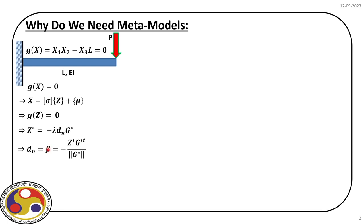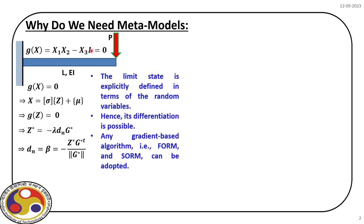The first order reliability method requires the gradient; for the second order reliability method, the limit state function must be twice differentiable. The key point is that in gradient-based reliability analysis, we must know the limit state function in closed form. For the cantilever beam, g(x) = x1·x2 − x3·l is an explicitly defined limit state, where we know the exact relation between x1, x2, x3 and can differentiate with respect to each variable to solve for the reliability index beta.